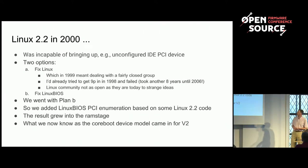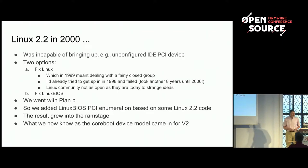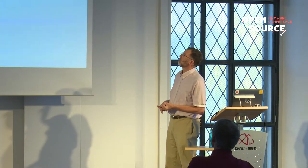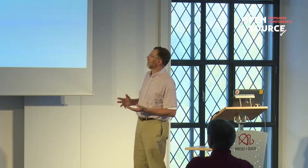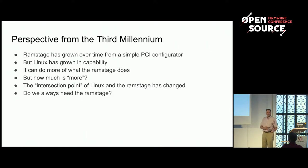That became the ROM stage, and the device model came in around V2. The work on Linux BIOS started in the second millennium, and now it's the third millennium — we've been around for like a millennium. The RAM stage has grown over time from this simple PCI configurator to a lot more. But Linux has similarly grown in capability and can do a lot more of what the RAM stage does.